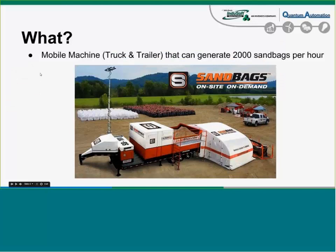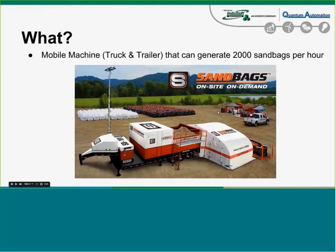The camera is used for a couple of reasons: to see how things are going at the site, for security at night, and for marketing capability when CNN and CBS and NBC can show video footage of the sandbag machine helping generate sandbags to save lives and property. It's a combination of a truck and a trailer — the cool part is it can generate 2,000 sandbags an hour. The previous Super 40 generated about 700 or 800 bags per hour, so this more than doubled it — a pretty significant increase.